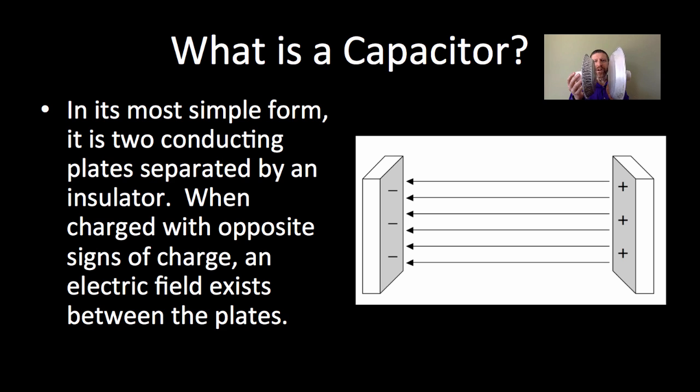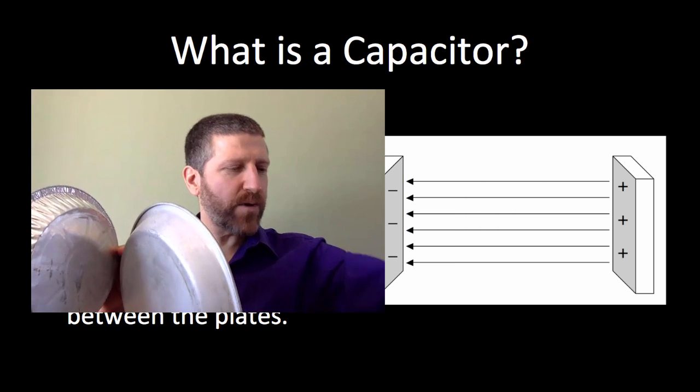So, separated by an insulator, and when you charge these with opposite charges, an electric field will exist between these plates. Now, how do you charge them with opposite charges? Well, what you got to do is you got to pull electrons off of this side and put it onto this side. And the way to do that is to connect a battery like this, or you could use something a little bit fancier like a Genicon generator like this. And that's what I'm going to use.